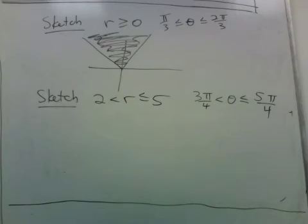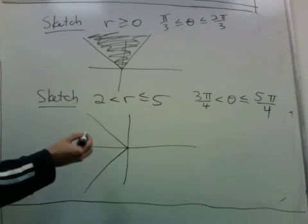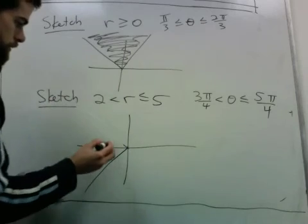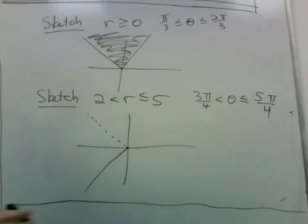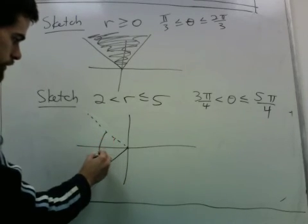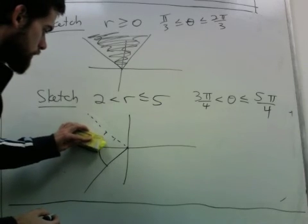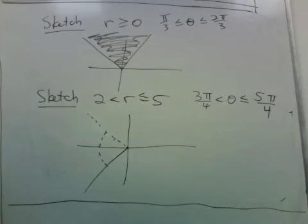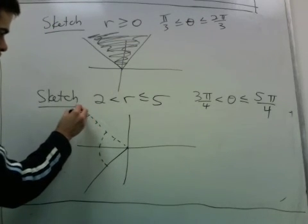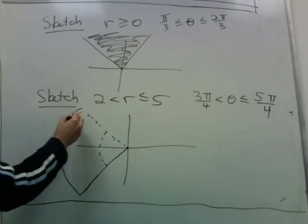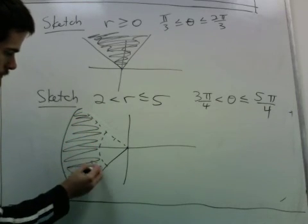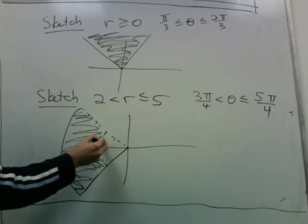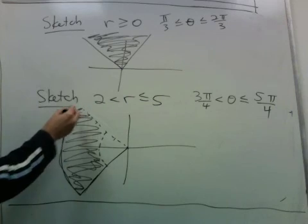Now let's try to sketch this set of inequalities. Theta goes from 3π/4 to 5π/4. It does not include this angle, so maybe I should put a dotted line. And we're told the radius goes from 2, but not including, up to 5. So we're in this range. So we don't include this line, and we don't include this arc. But we do include this and this.